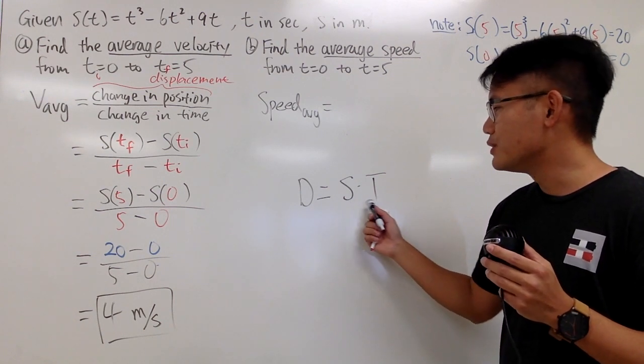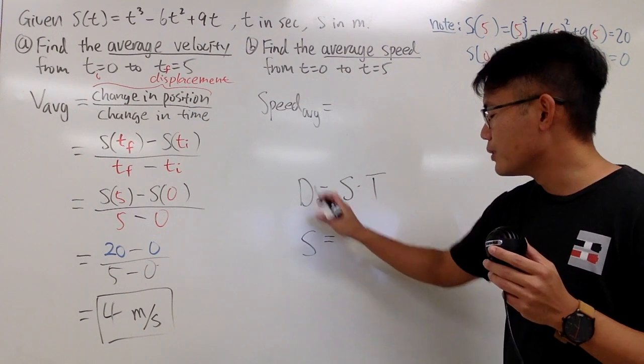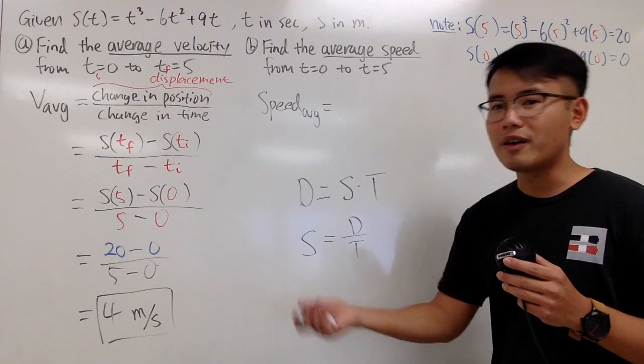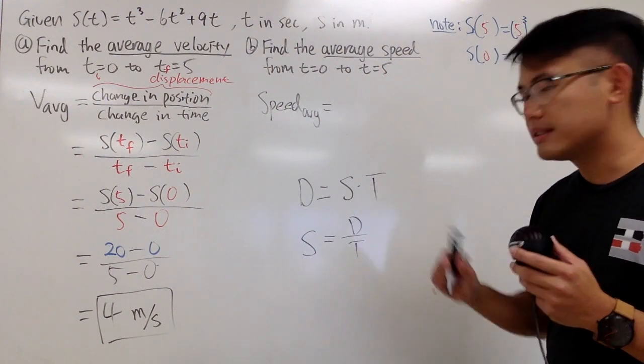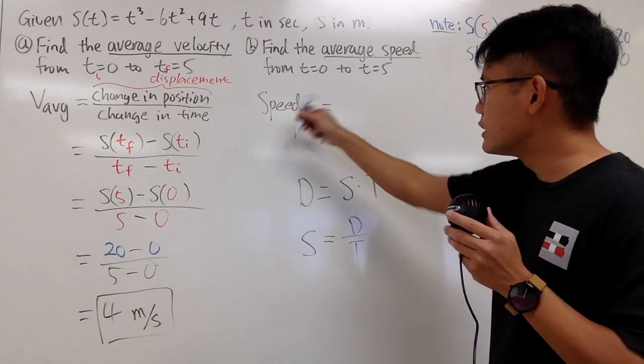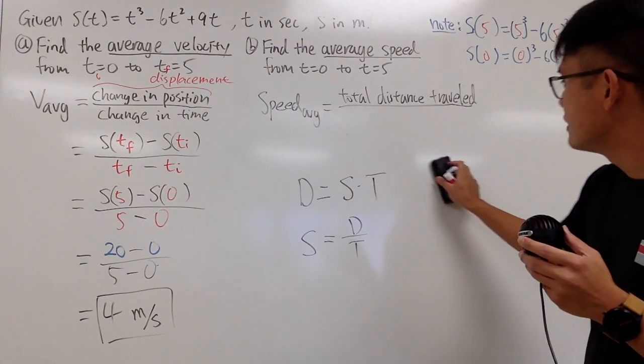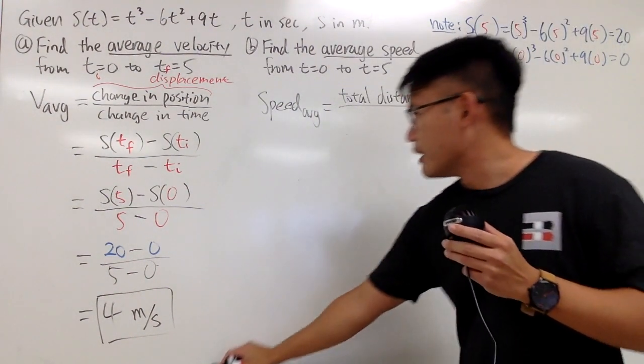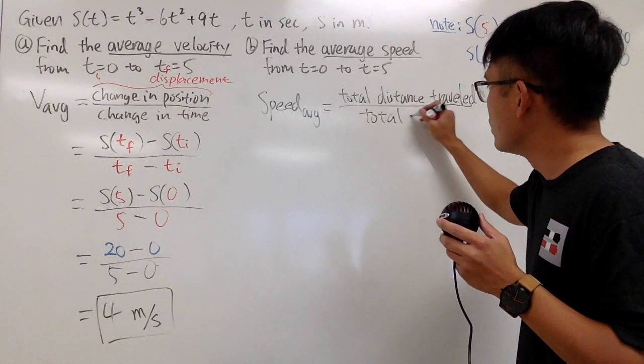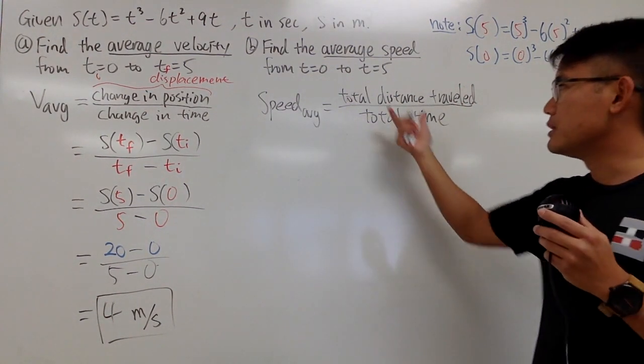And here is how we find the speed. Recall back in your algebra class, your teacher will tell you distance equals speed times time. This is the good formula from algebra. If you care about speed, divide both sides by t, so you're talking about speed equals distance over time, like 60 miles per hour when you drive on the freeway. This distance is the total distance traveled.